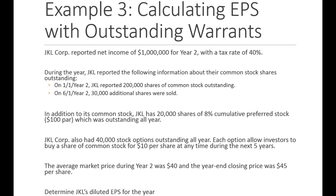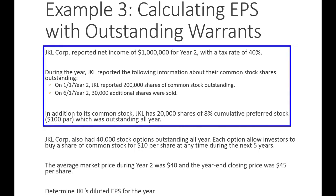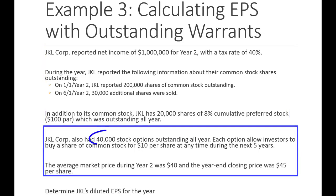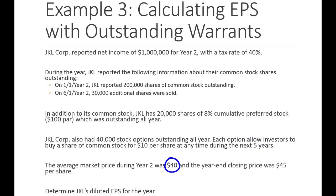This is JKL Corporation — the same example we just did, but now we're adding some new information. The first part is exactly the same. What we're adding is that they also have 40,000 stock options outstanding all year long. Each option allows investors to buy one share of common stock for ten dollars per share — that's the default one-for-one ratio, though contracts can differ. They have the right to buy at any time in the next five years. The average market price during year two was forty dollars, and the ending price was forty-five dollars per share. We want to calculate diluted earnings per share.